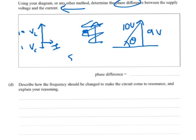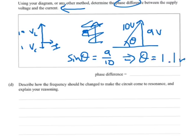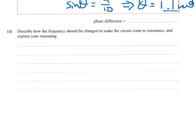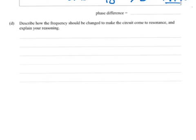So what have we got? Sine θ equals 9 over 10. So rearrange that to find θ, which is our phase angle. So inverse sine 9 over 10 should give us in radians 1.1 radians. Lovely. D: describe how the frequency should be changed to make the circuit come to resonance and explain your reasoning.